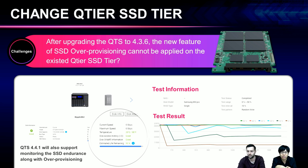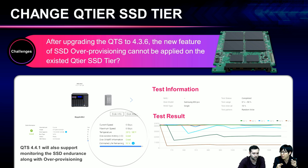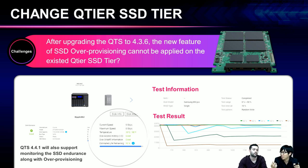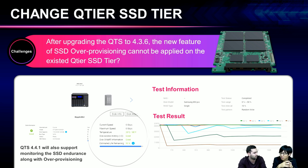Secondly, because we released the SSD over-provisioning function in 4.3.6, there is a consideration: SSD over-provisioning can only be enabled when creating a new SSD array. And as previously mentioned, you cannot remove the SSD tier once you start storing data in it. So before 4.3.6, existing customers who already enabled QTier cannot enjoy the SSD over-provisioning function. Over-provisioning is very useful — it helps preserve SSD performance and prevents SSD degradation over time. The more space you allocate for over-provisioning, the more beneficial it is.